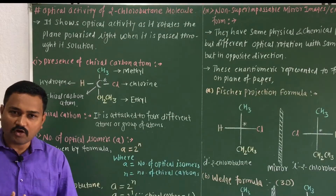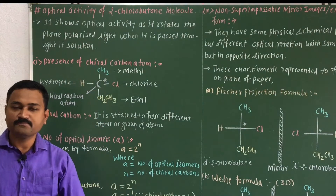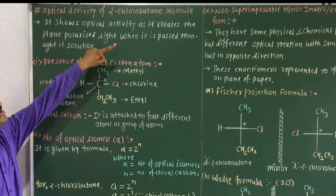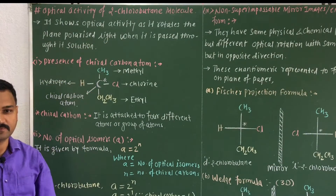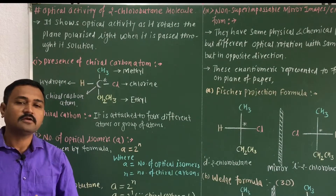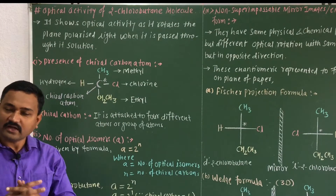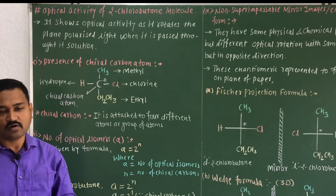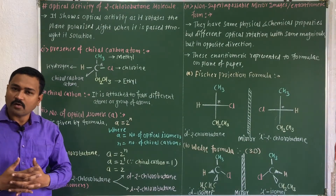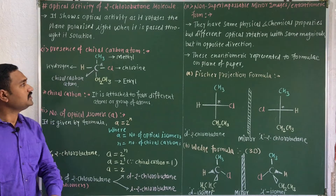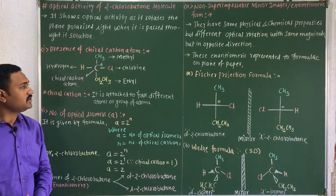The optical activity shown by 2-chlorobutane is due to the rotation of plane polarized light when it passes through its solution. The plane polarized light gets rotated by passing through the solution — this phenomenon is known as optical activity. Generally this optical activity phenomenon is shown due to the presence of a chiral carbon atom.